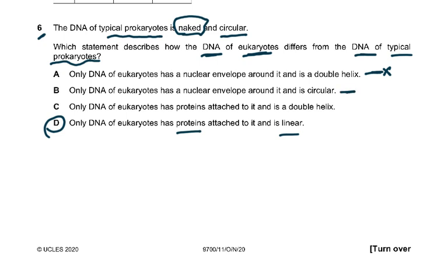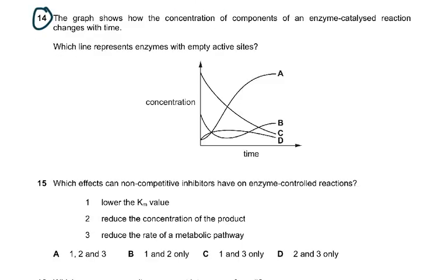Why are the other options wrong? Option A says eukaryote DNA has a nuclear envelope and is a double helix — but prokaryote DNA is also a double helix. Option C says eukaryote DNA is circular — that's wrong because in eukaryotes DNA is only circular in the mitochondria and chloroplasts; in the nucleus it is linear. Option B is wrong because even prokaryote DNA is a double helix. The answer is D.